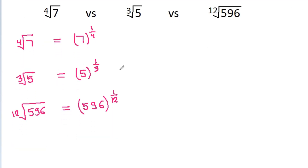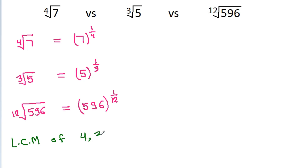We have the exponents 1 by 4, 1 by 3, and 1 by 12. And we know that the LCM of 4, 3, and 12 is equal to 12.